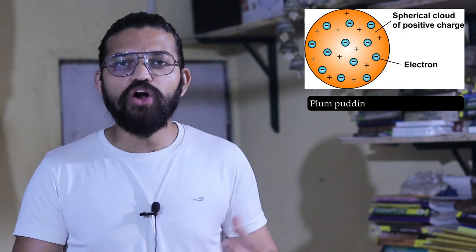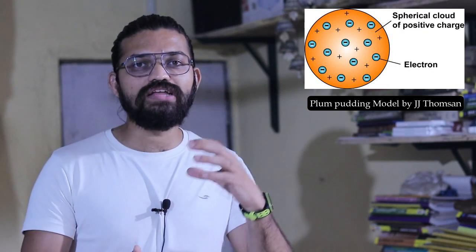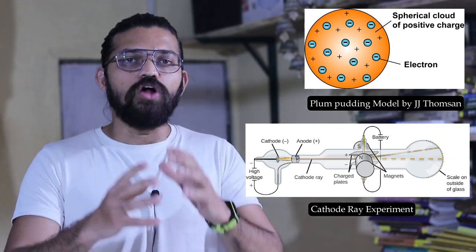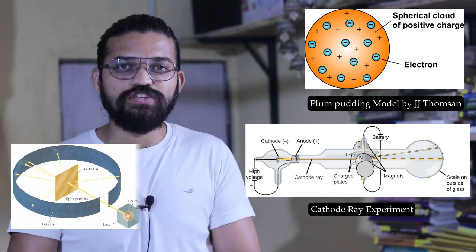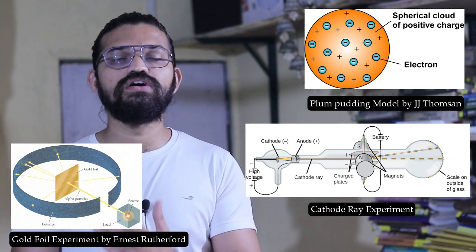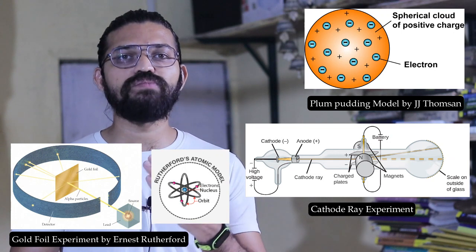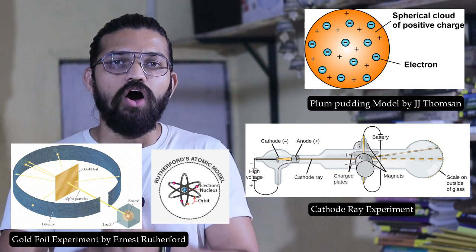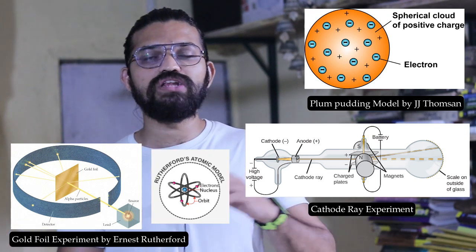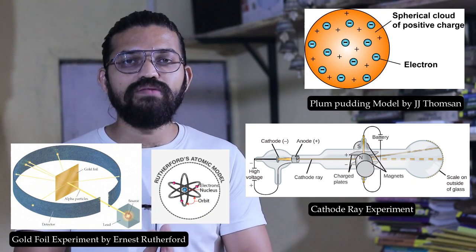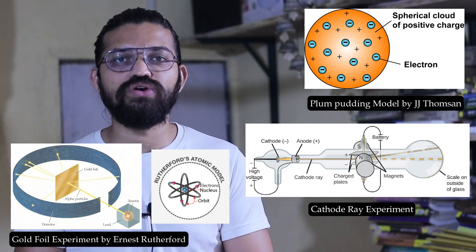We have seen the plum pudding model by J.J. Thompson. Also, we have seen the discovery of the electrons in the cathode experiment. In 1911, we have seen the gold foil experiment by Ernest Rutherford. We discovered the nucleus and the positively charged protons lying in the nucleus, and we have seen the electrons continuously revolving around the nucleus. This is the model proposed by Ernest Rutherford in 1911.